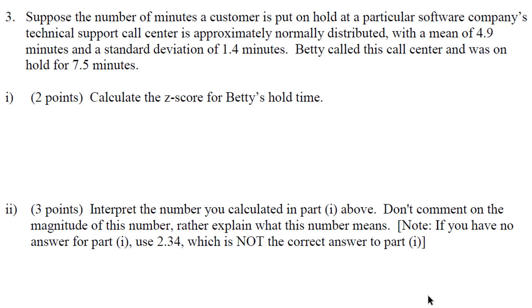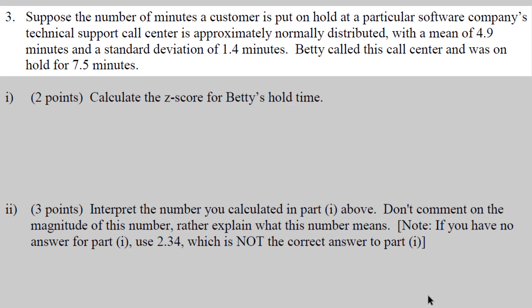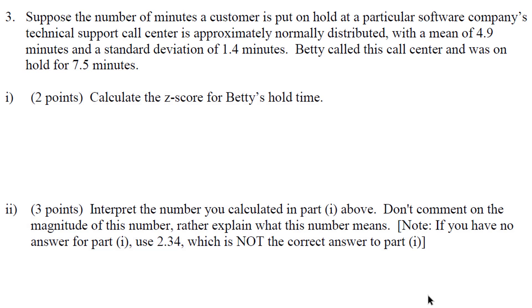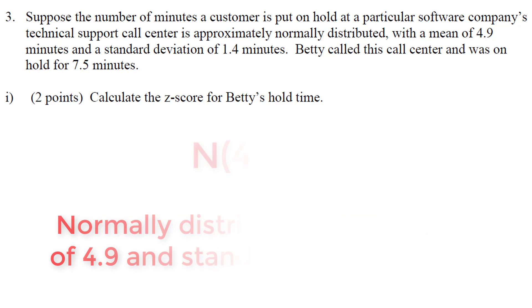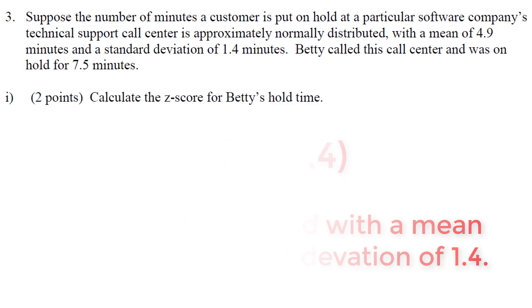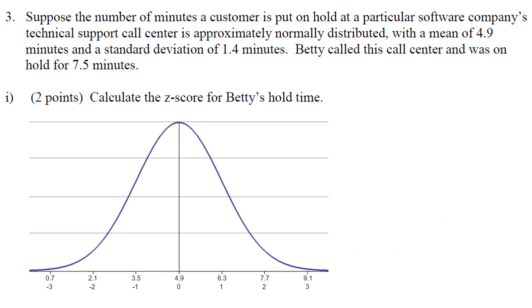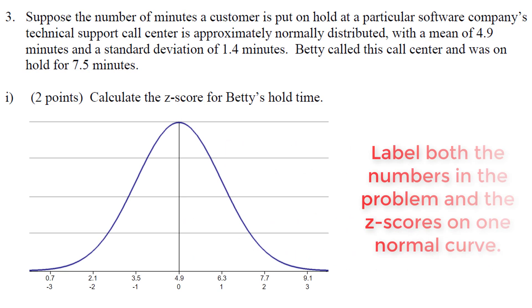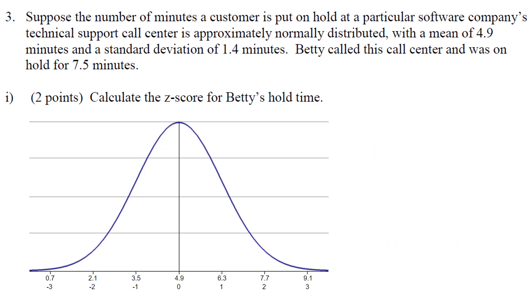Question three deals with the normal curve. Suppose the number of minutes a customer is put on hold at a particular software company's technical support center is approximately normally distributed with a mean of 4.9 and a standard deviation of 1.4. This is an important part of the question because we're told it's already normal with a mean and standard deviation. At this point I would start drawing my normal curve, put it in context of the problem, and mark the z-scores. This will help you solve many of the parts to come.